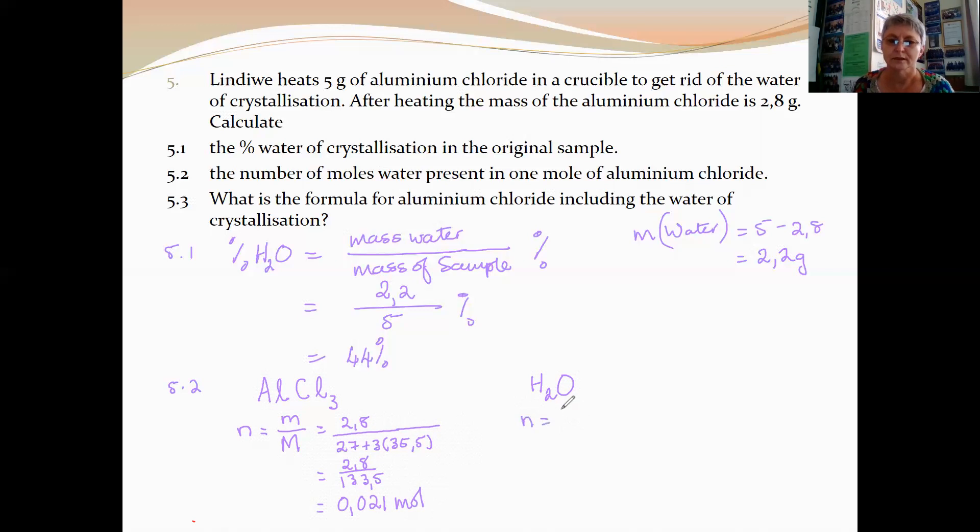The moles of water is the mass of the water divided by the molar mass of water. It's 2.2 divided by 18 for water. So 2.2 divided by 18 would be 0.122 mole.